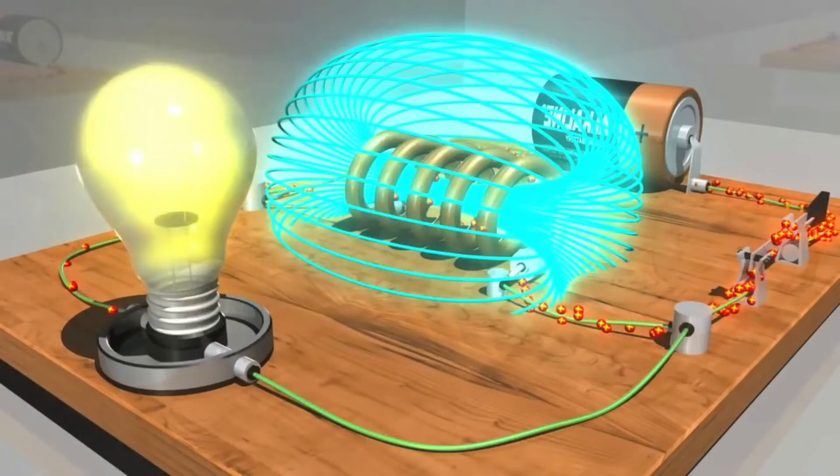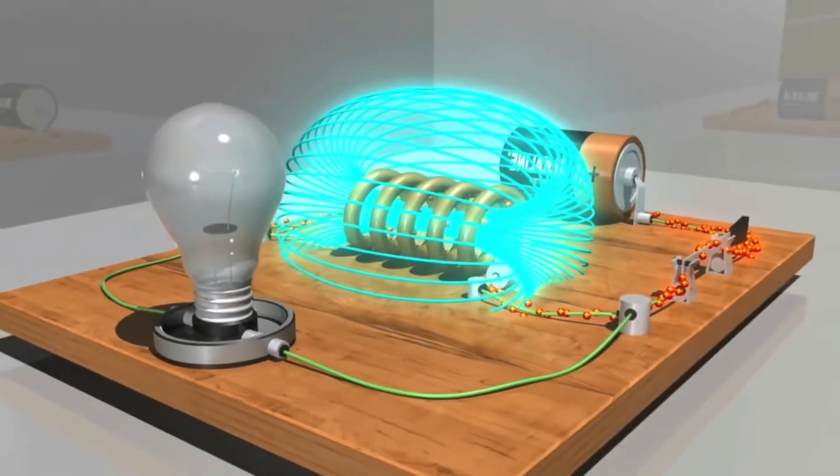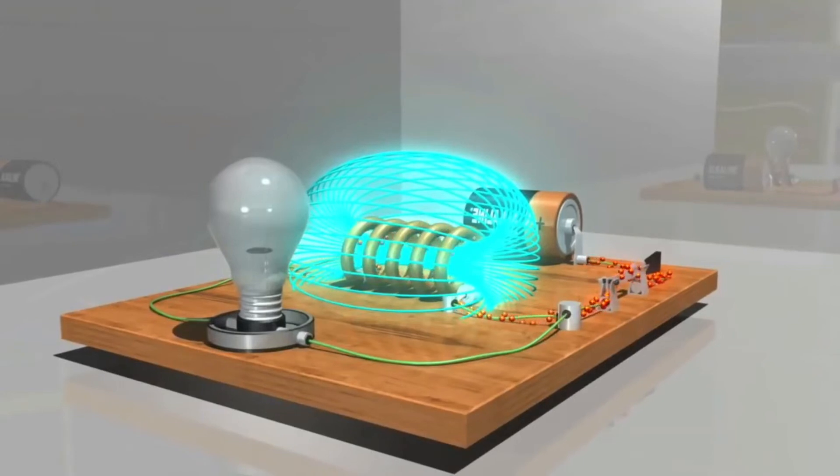Once the magnetic field around the inductor reaches its maximum field, the back EMF fades and the current now favors the path through the inductor because the bulb creates some resistance to the current.